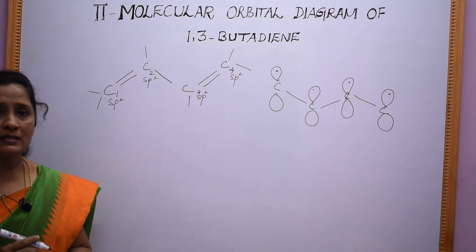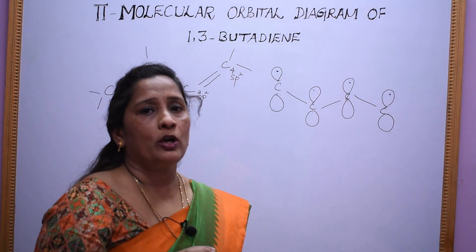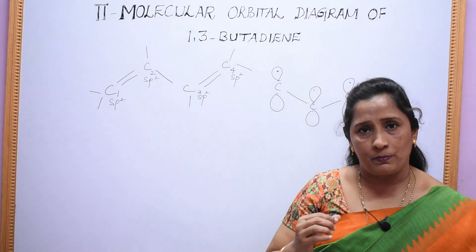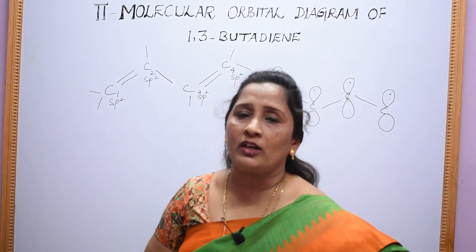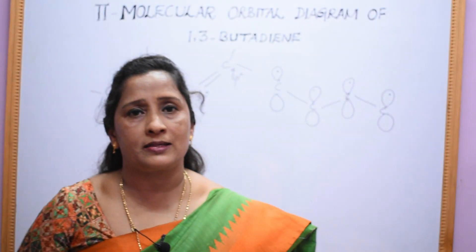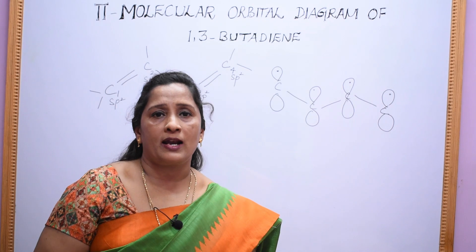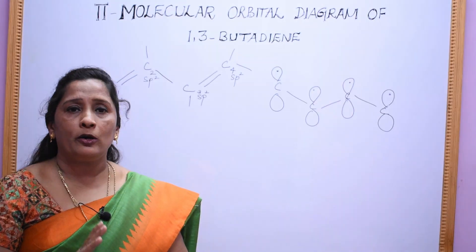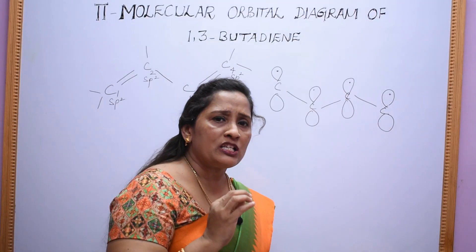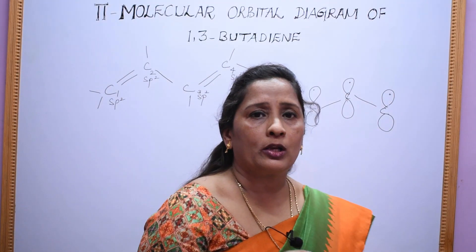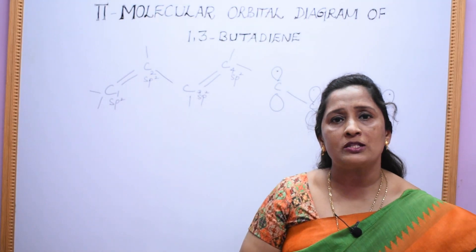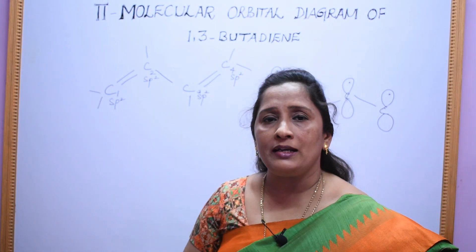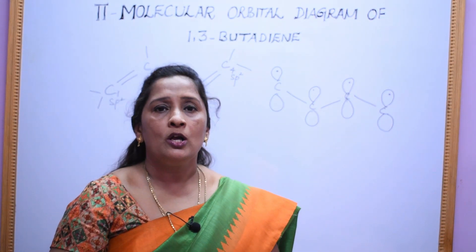In any pi system, the number of pi molecular orbitals is equal to the number of unhybridized p-orbitals. Since in 1,3-butadiene we have four unhybridized p-orbitals, we expect four pi molecular orbitals. Out of these four, two are bonding molecular orbitals and two are anti-bonding molecular orbitals.